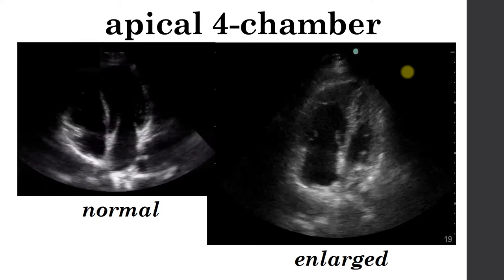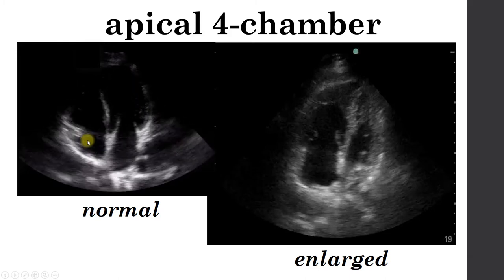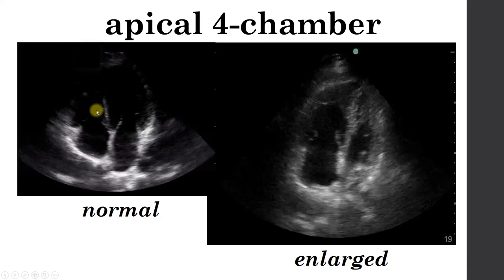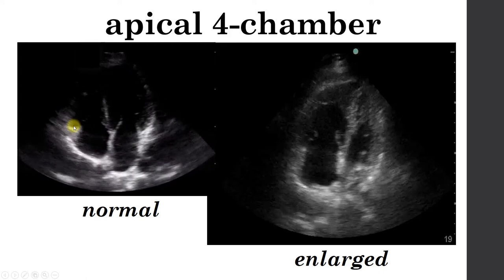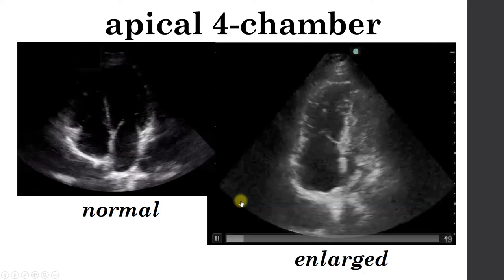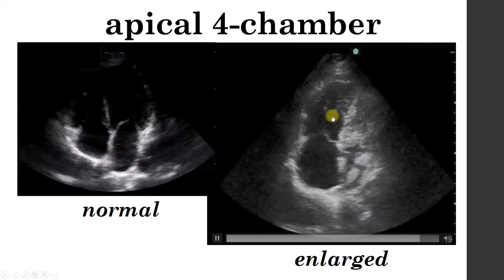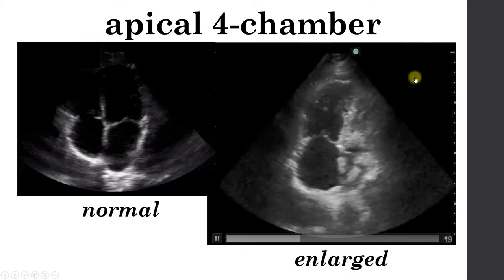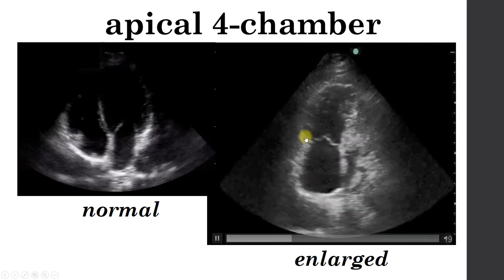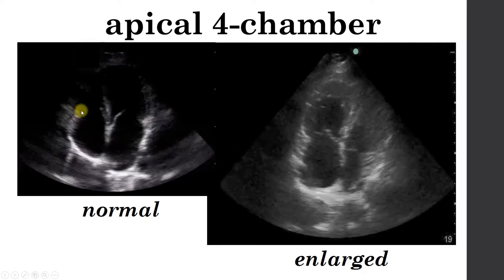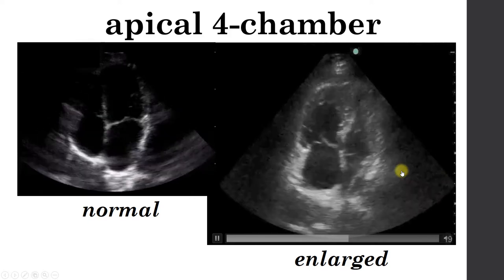I like the apical four-chamber view when evaluating for right ventricular dysfunction. On the normal view, the right ventricle should be about one-third to the left ventricle's two-thirds. You can also place your eye on the tricuspid annulus and watch it bounce in and out, which indicates normal right ventricular function. In a patient with RV enlargement and RV failure secondary to massive pulmonary embolism, the right ventricle is actually larger than the left ventricle. The tricuspid annulus is barely moving. If I were to see this in a hypotensive patient, I would think massive pulmonary embolism until proven otherwise.